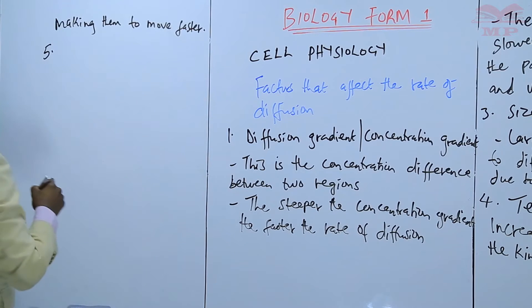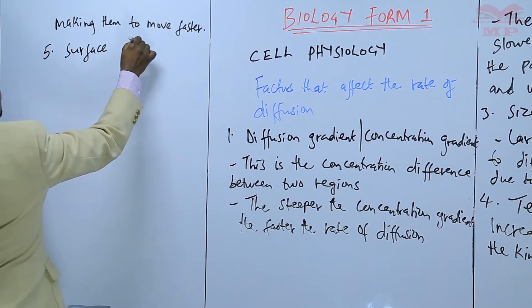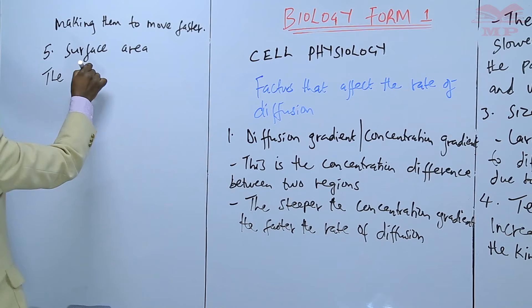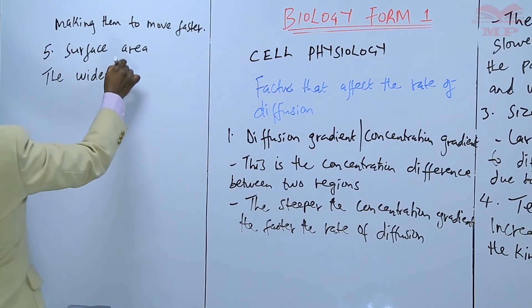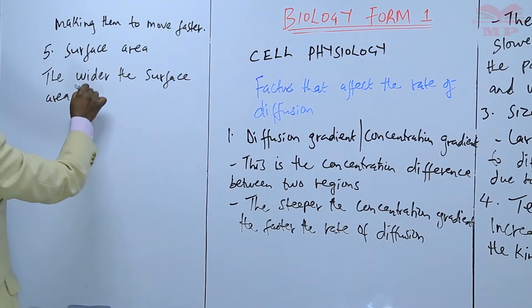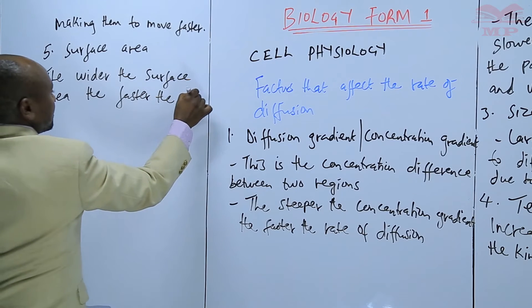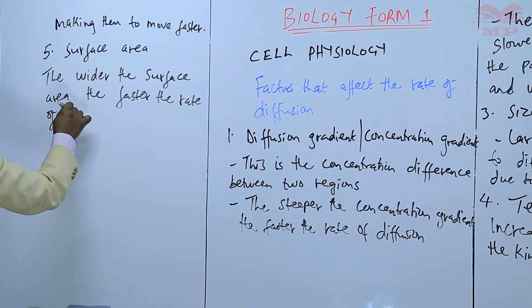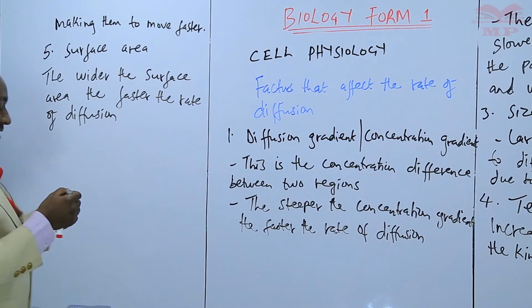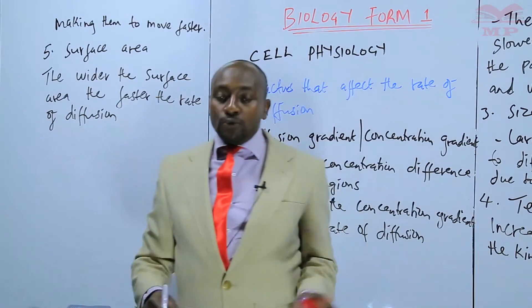Point number five, there is the surface area. The wider the surface area, the faster the rate of diffusion. So if the surface area is wide, then the particles are able to diffuse faster.